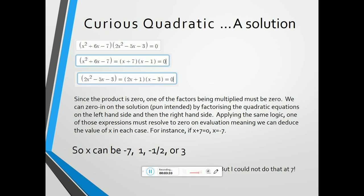Since the product is 0, one of the factors being multiplied must be 0. We can zero in on the solution by factorizing the quadratic equations on the left-hand side and then the right-hand side. Applying the same logic, one of those expressions must resolve to 0 on evaluation, meaning we can deduce the value of x in each case. For instance, if x plus 7 equals 0, x must equal minus 7.